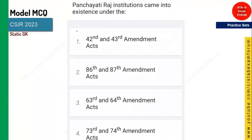The next question: PRI, that is Panchayati Raj Institution, came into existence under which amendment? Whatever the Panchayat system you see nowadays in the country, it was introduced through the 73rd and 74th amendments. On the 73rd and 74th amendments, this Panchayati Raj Institution came into the picture.